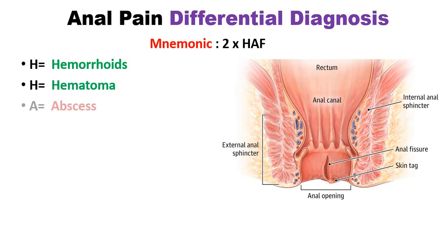Next is A. The first A stands for abscess — if an anorectal abscess occurs, it also causes anal pain. The second A stands for anal prolapse — if it occurs, it also causes anal pain. This is another differential diagnosis.